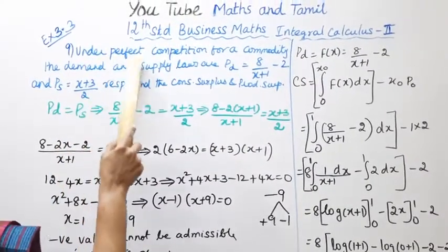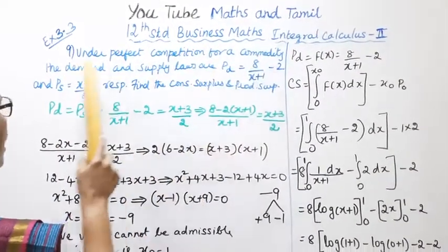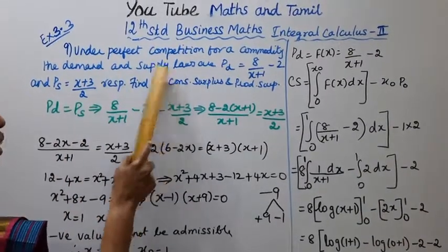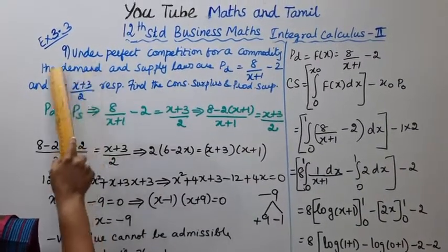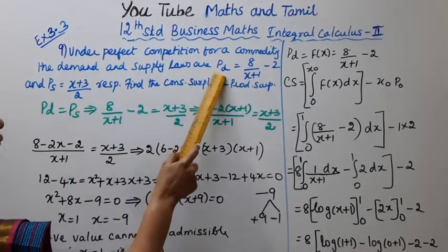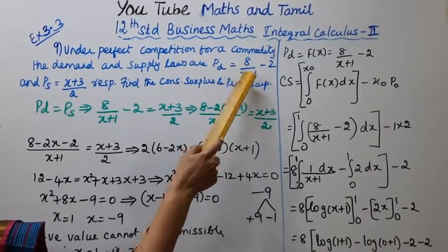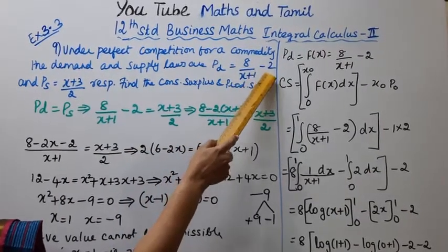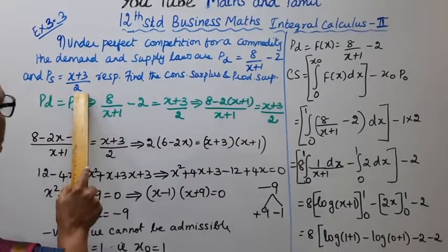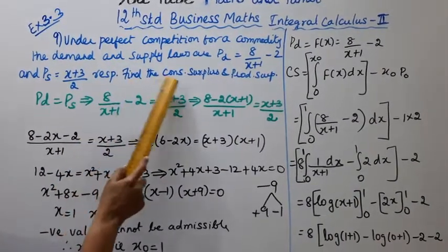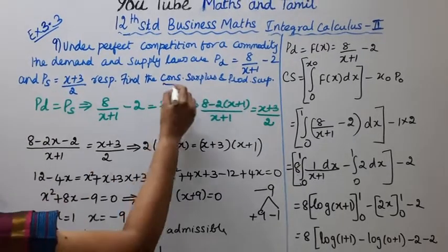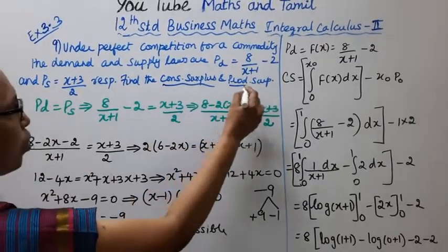Under perfect competition for a commodity, the demand and supply functions are given as: demand function PD equal to 8 by (x plus 1) minus 2, supply function PS equal to (x plus 3) by 2 respectively. Find the consumer surplus and producer surplus.